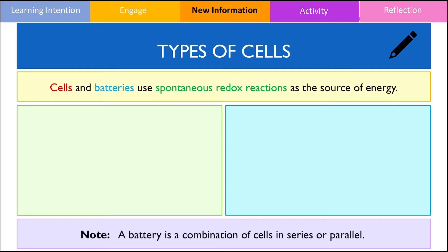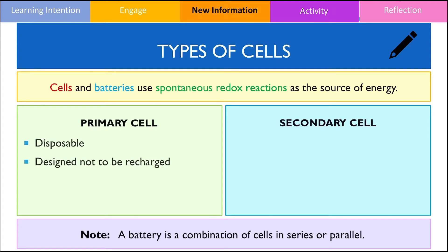We can classify cells and batteries into two main types: primary cells and secondary cells. Primary cells are defined as non-rechargeable cells and are to be disposed of once the battery is dead. The reason for this is because the redox reaction occurring in the galvanic cell is not reversible, which means there is no way to regenerate the reactants again.